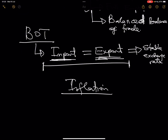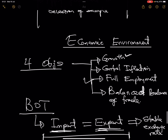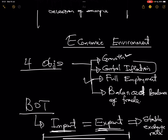Inflation is rising price without value. If a pair of socks costs $10 today and the same pair costs $15 in three years with no improvement in quality, that is inflation. Inflation is not good when it is too high; a little inflation is good because it helps grow the economy. When it is too high it becomes a problem and must be controlled — it is rising price without value.